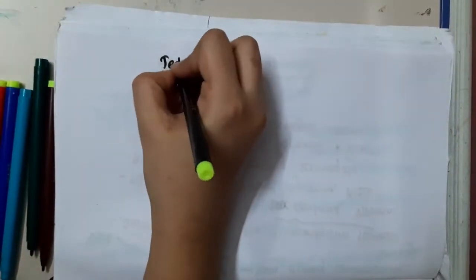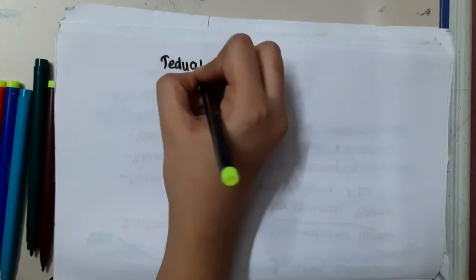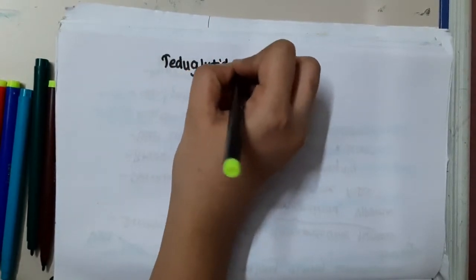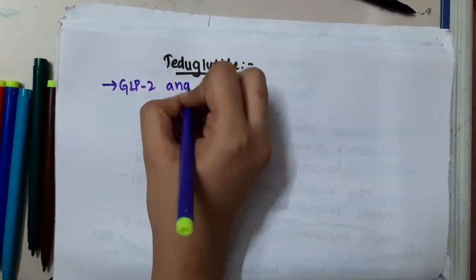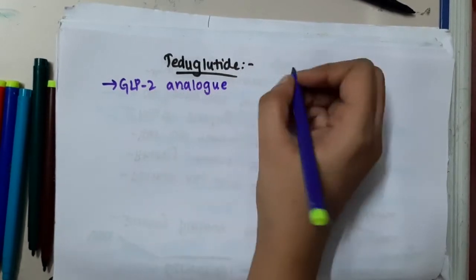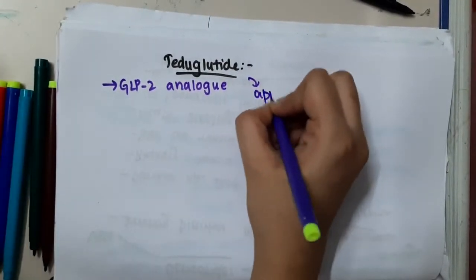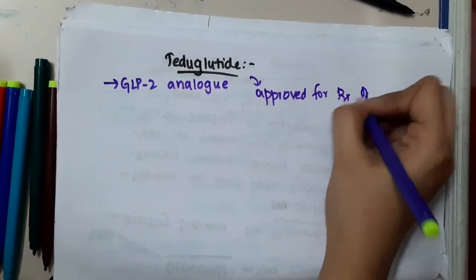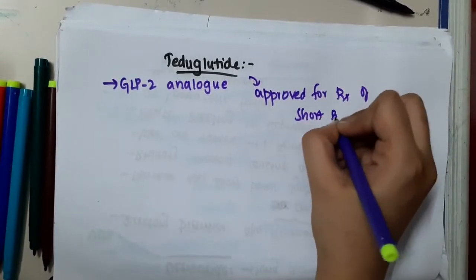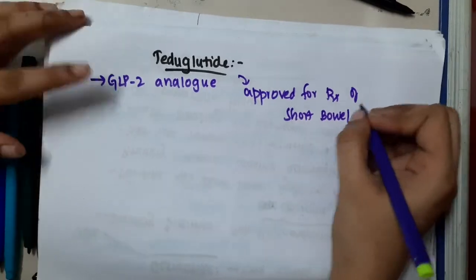Hello friends, let us now learn some important points about Teduglutide. What is Teduglutide? Teduglutide is a GLP-2 analogue. This Teduglutide is actually approved for treatment of short bowel syndrome.